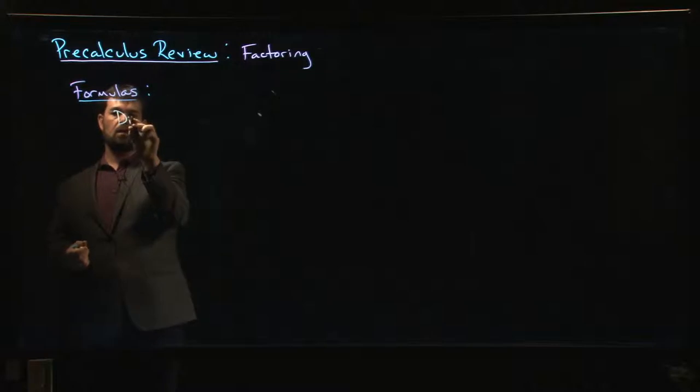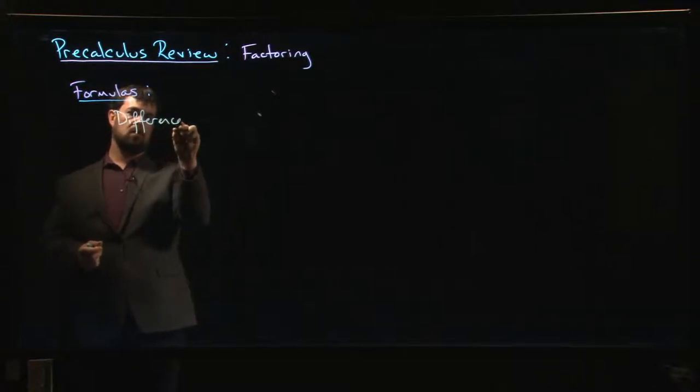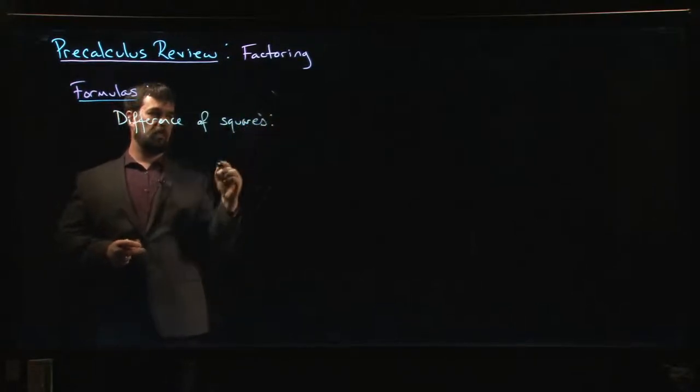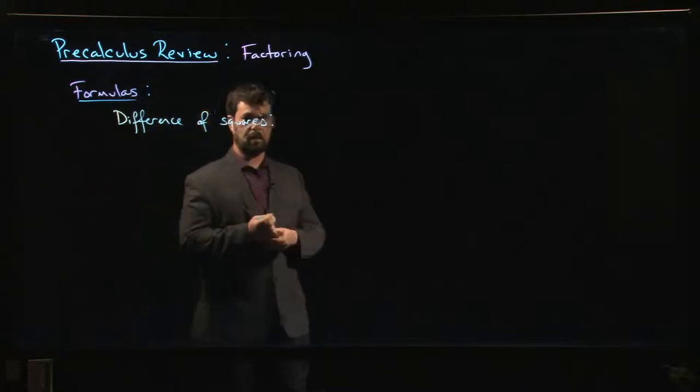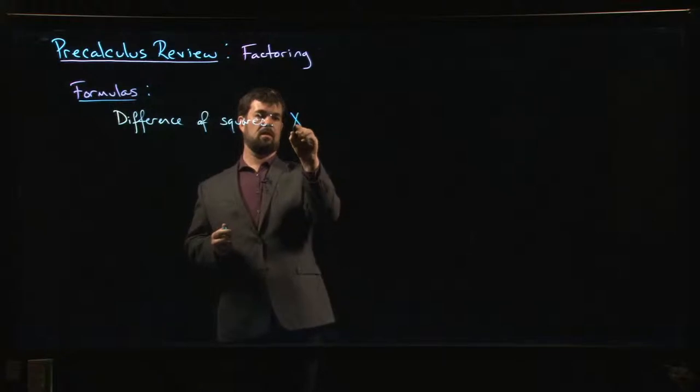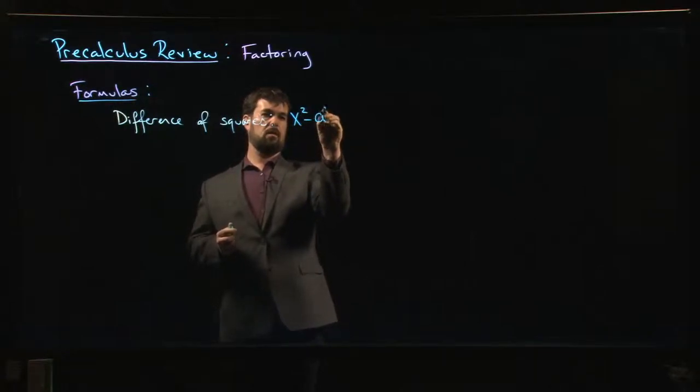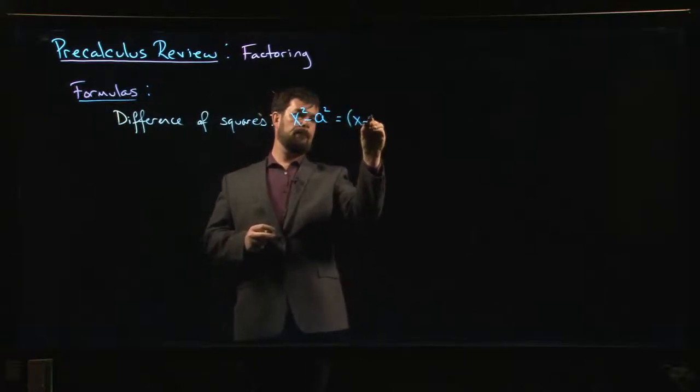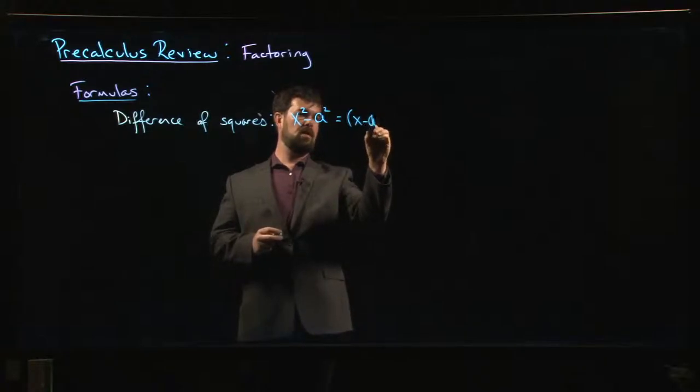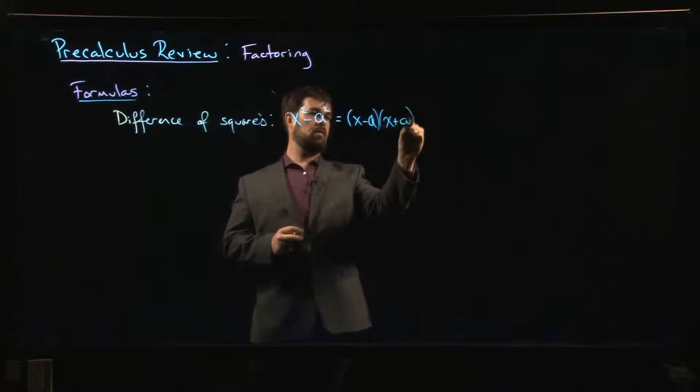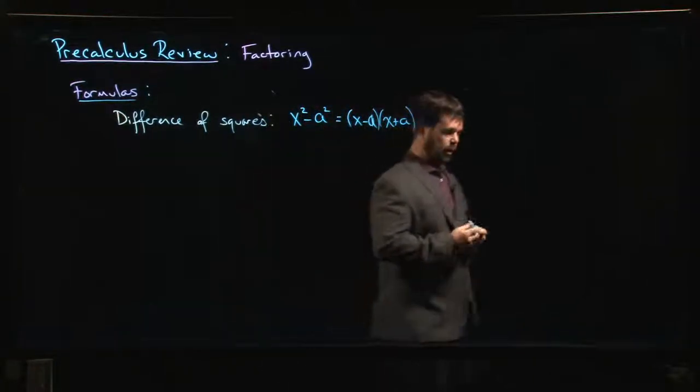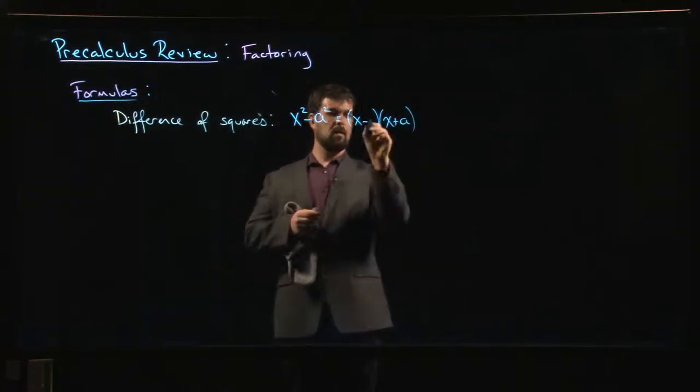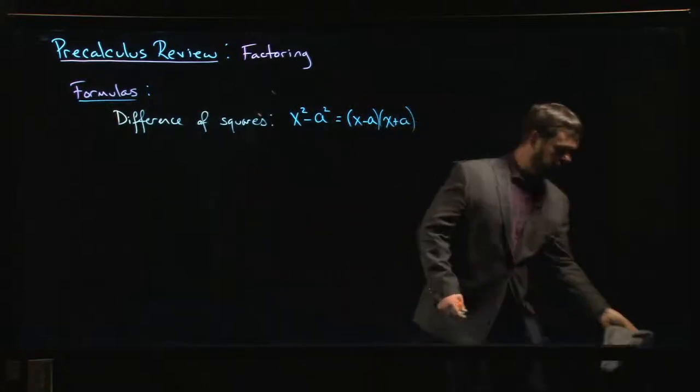One of the formulas that comes up more often than you might think is the difference of squares formula. The difference of squares formula says that if you have x squared minus a squared, you can factor that as x minus a times x plus a.